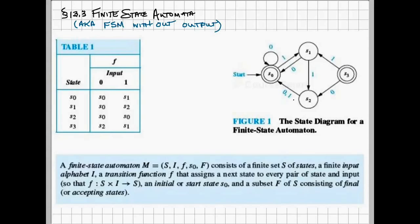So in the definition here, we see that a finite state automata M is made up of five things this time. S, which is a set of states, and I, which is our input alphabet.